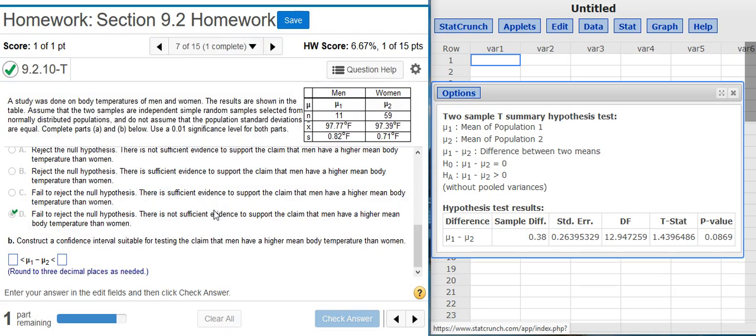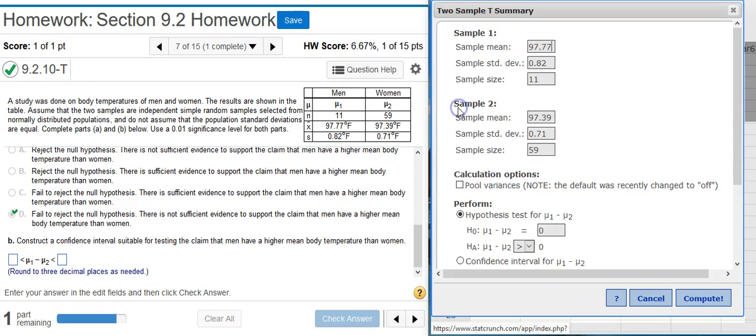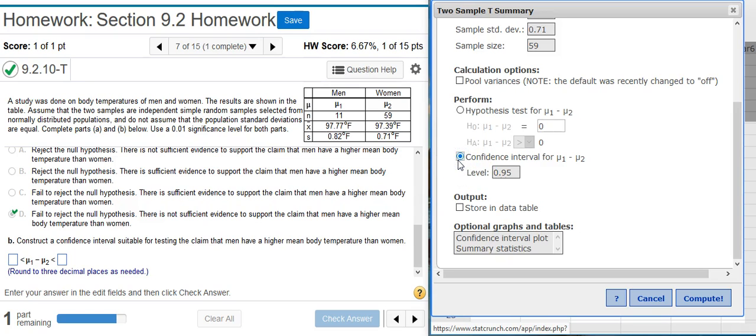Now Part B asks us to construct a confidence interval. I can go through the menu options in StatCrunch and input once again all of these summary stats. Or I can take a shortcut by using the current results window and clicking on this button in the upper left-hand corner called Options. Then in the drop-down that follows, click Edit. Here I have all of the same summary stats. Just switch this radio button to confidence interval. I need to make sure I have the appropriate confidence level. Here I am asked to use a 1% significance level. Normally, in constructing the confidence interval, we would then select the complement of 1%, which is 99%, for our confidence interval level.